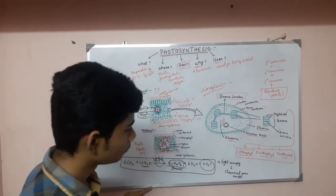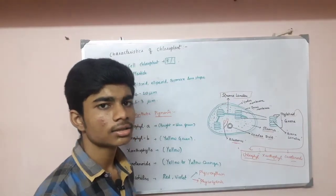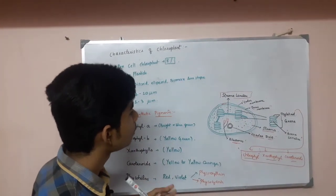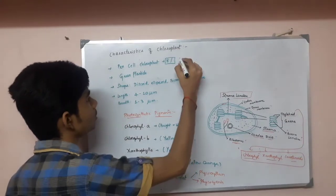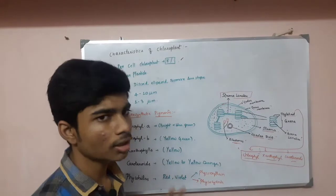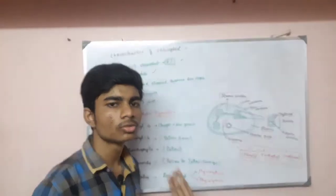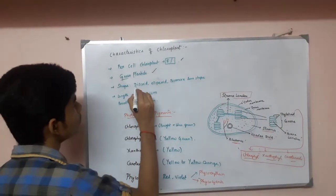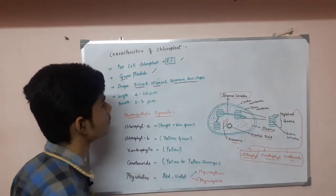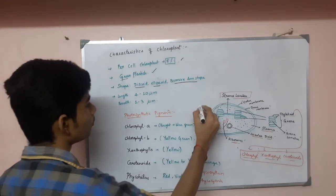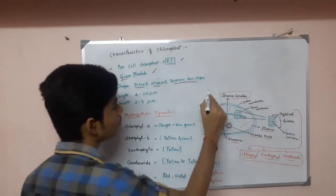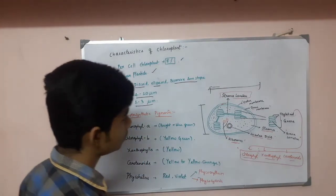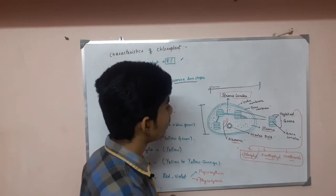In leaves, chloroplasts constitute about 8% per cell. Chloroplasts are a type of green plastid — there are three types of plastids, including leucoplasts. The shape of the chloroplast would be discoid, ellipsoid, or biconvex lens-shaped. Its length would be 4 to 10 micrometers and its breadth would be 1 to 3 micrometers. These are the characteristics of chloroplasts.